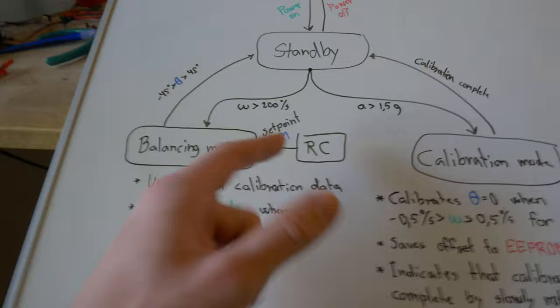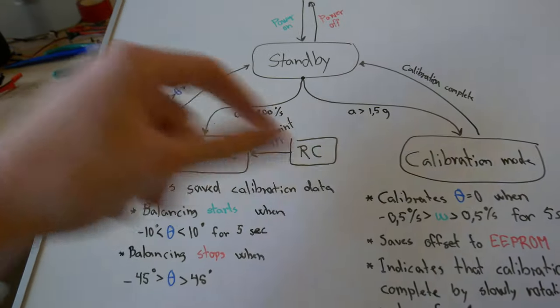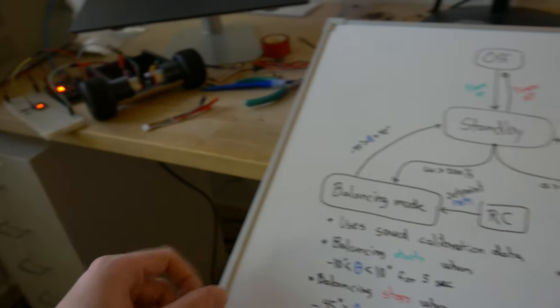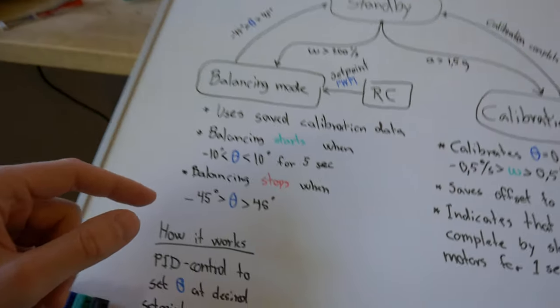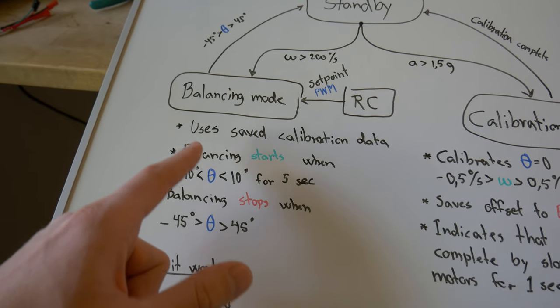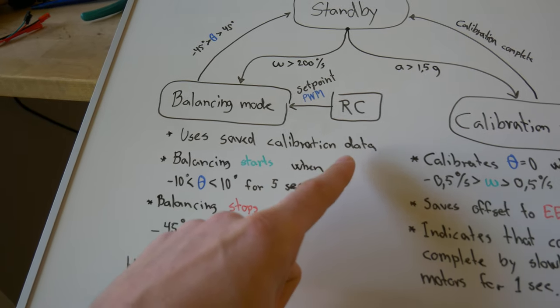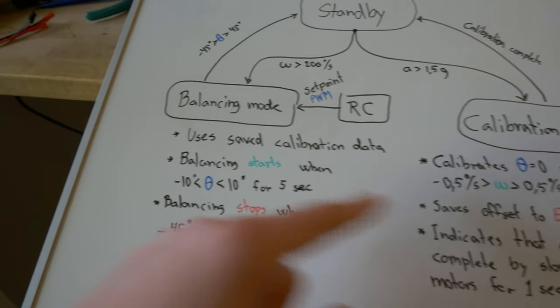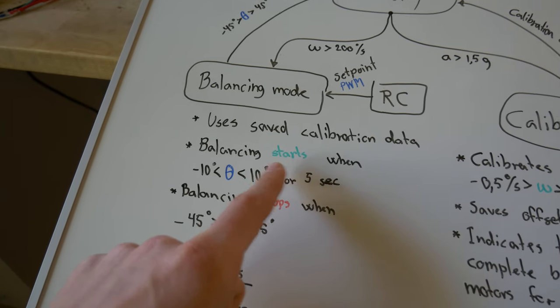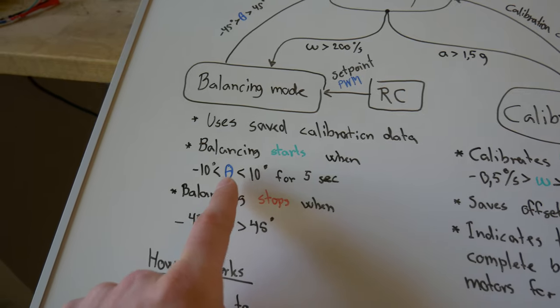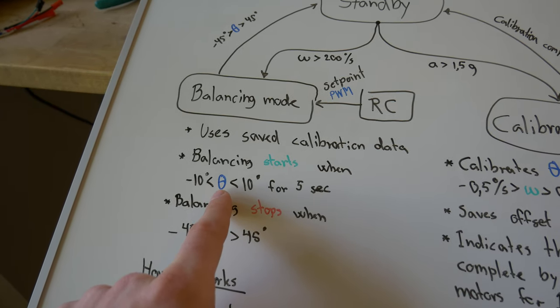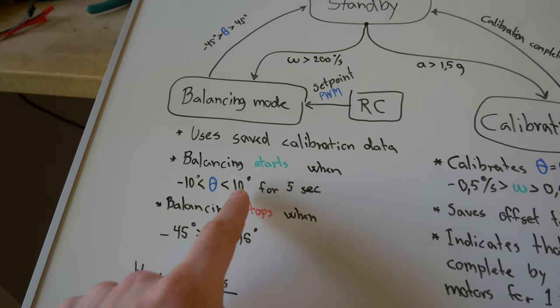If you take the vehicle and rotate it, it's going to start the balancing mode. The balancing mode takes an RC input, which is the setpoint. That is the ability to control the vehicle with an RC signal.